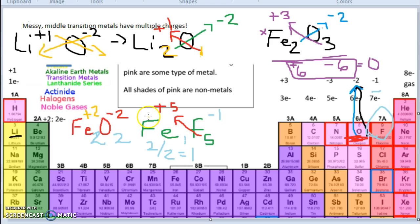So always check the elements that are not messy middle transition metals first, because they always have consistent charges. And then from there, work backwards and figure out your messy middle transition metal. Alright, that's it. Again, do the worksheet and please come see me for help when you need it.